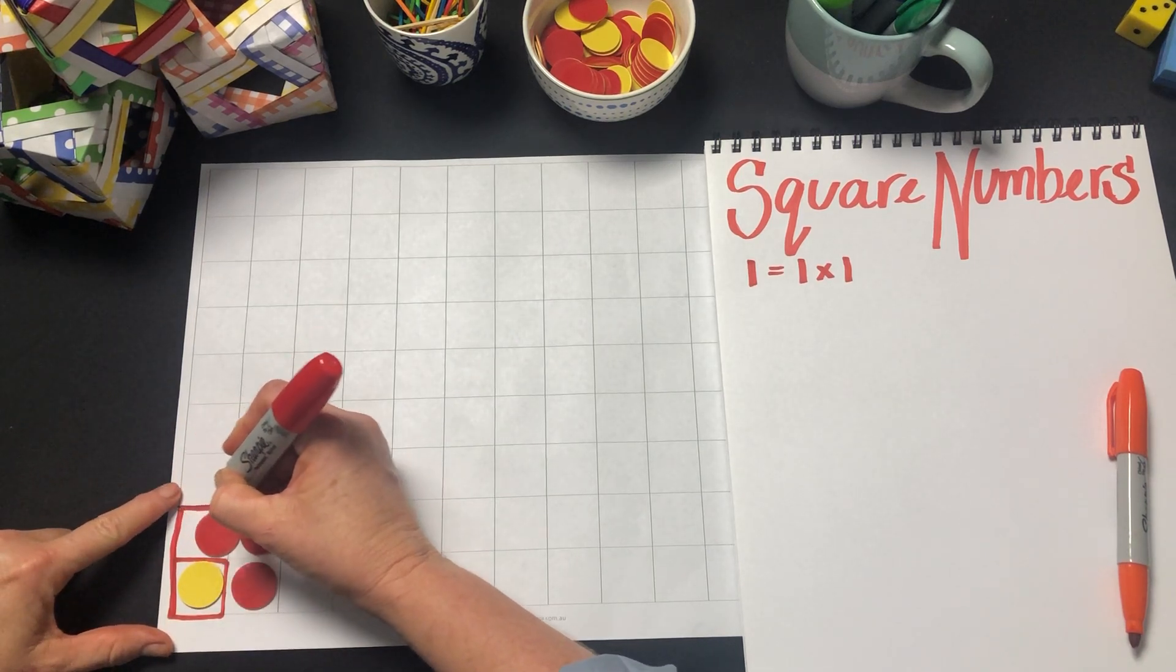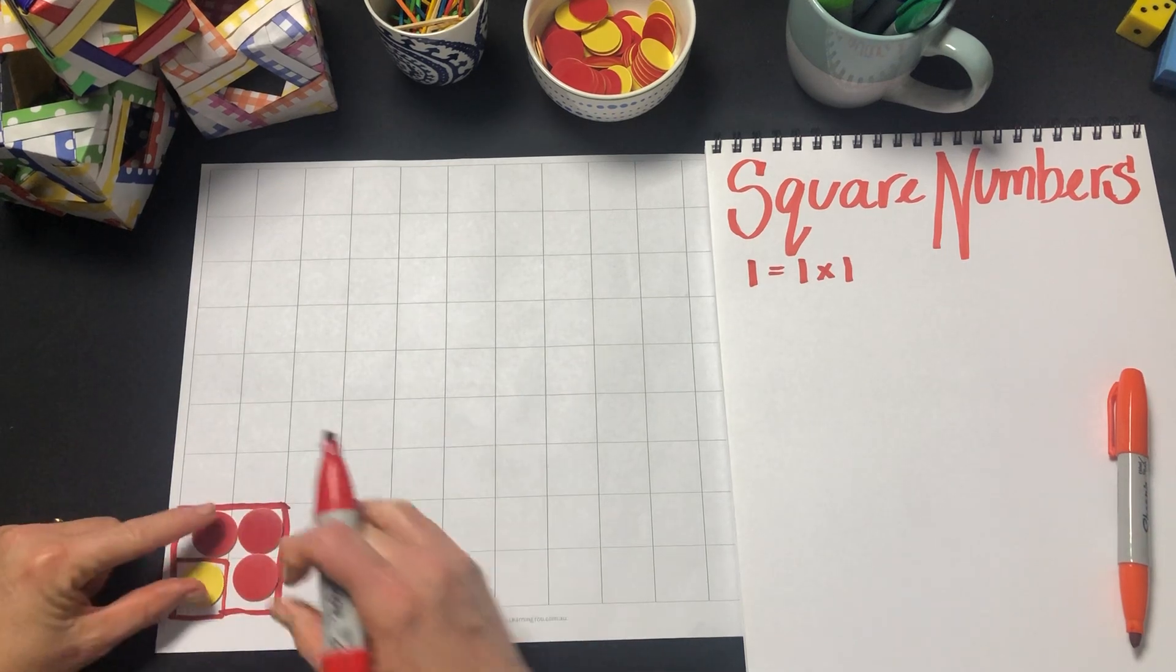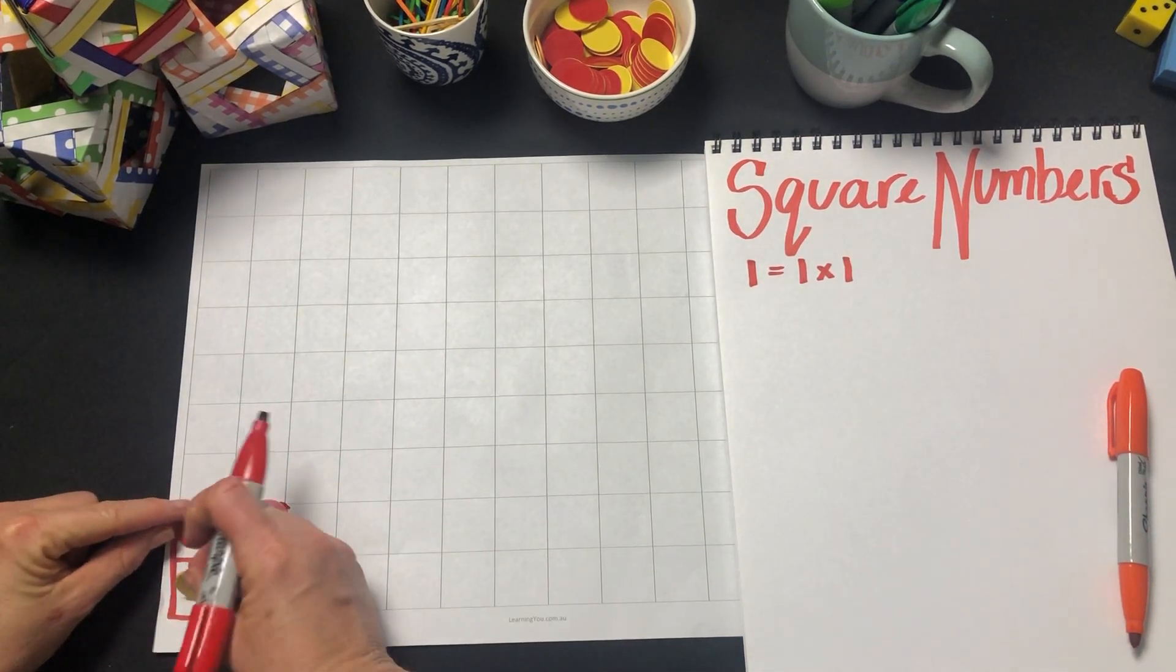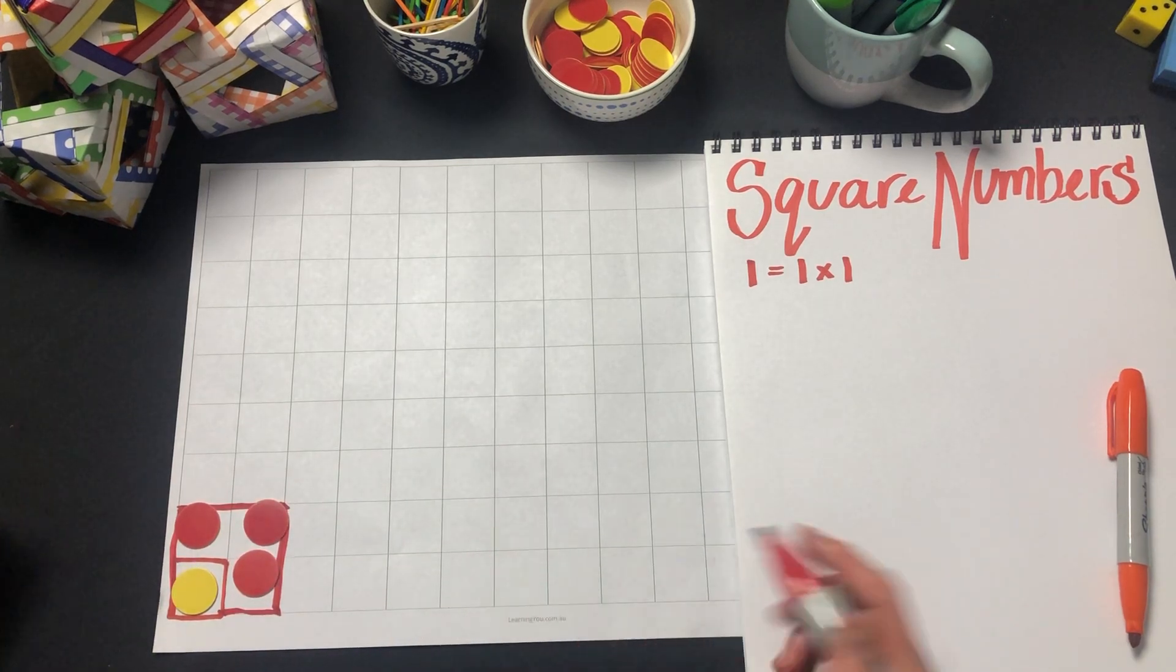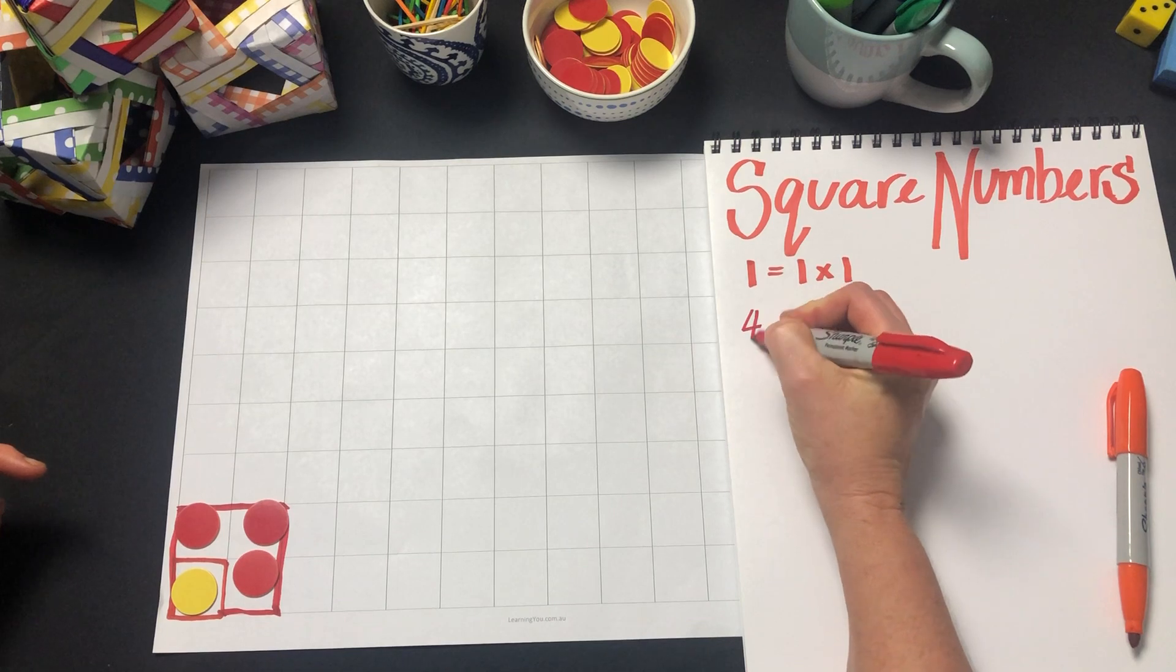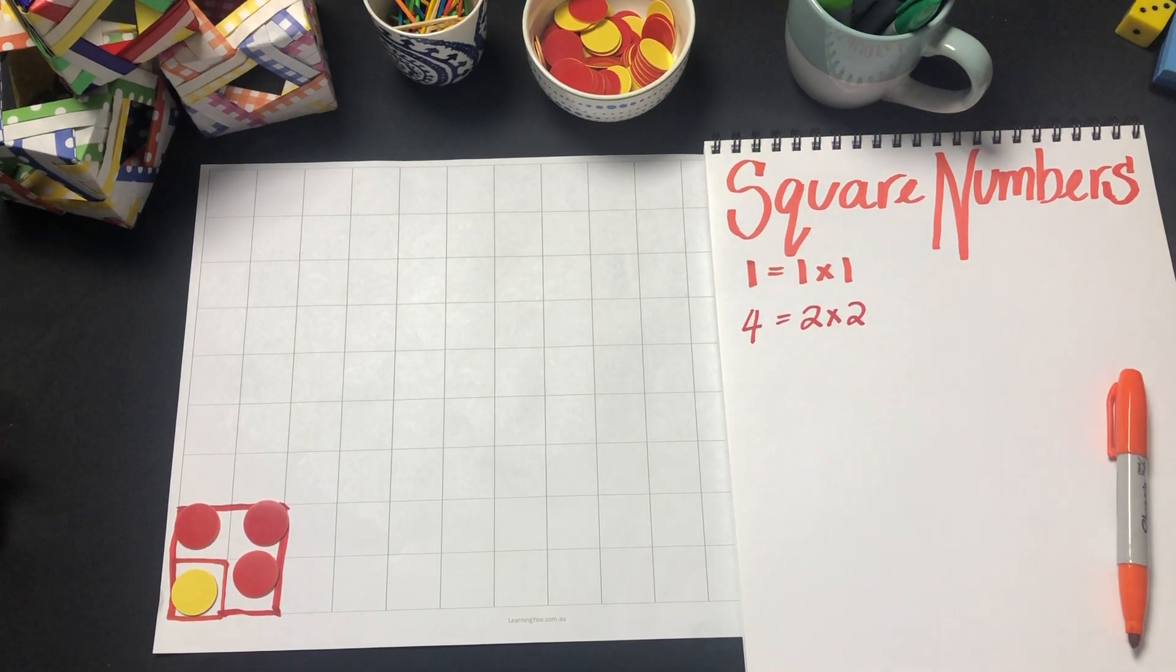It has a side of 2 and we need a total of 4 squares to fill up that 2 by 2 square. So 4 equals 2 by 2 or 2 multiplied by 2, and it's square.